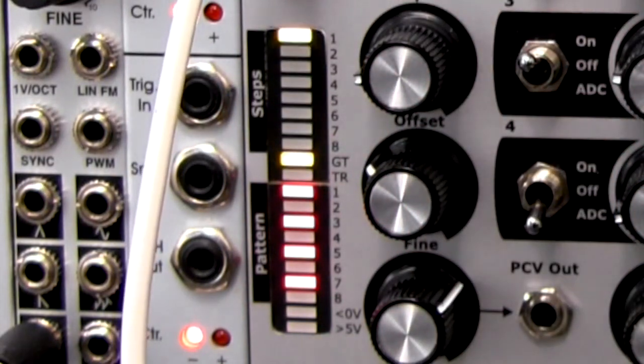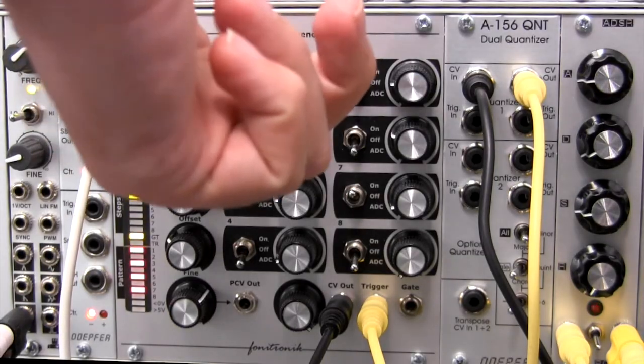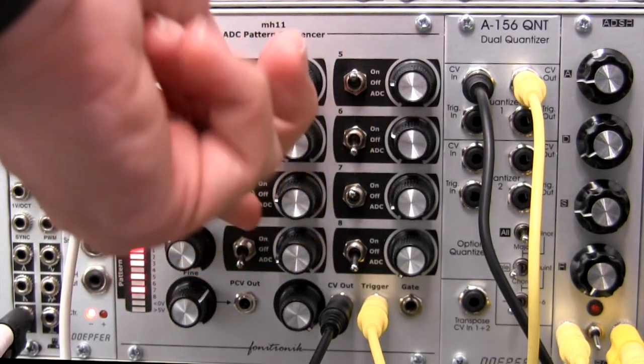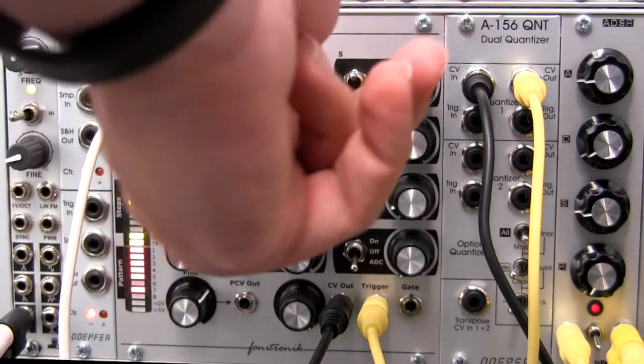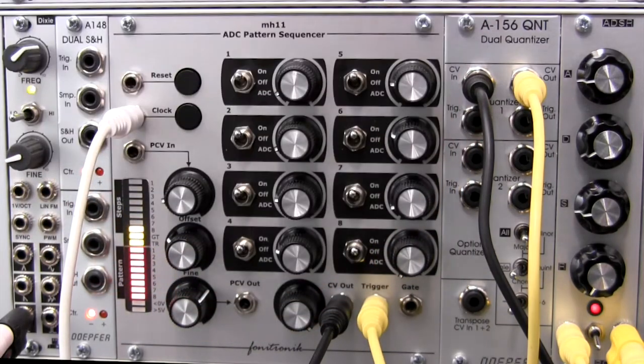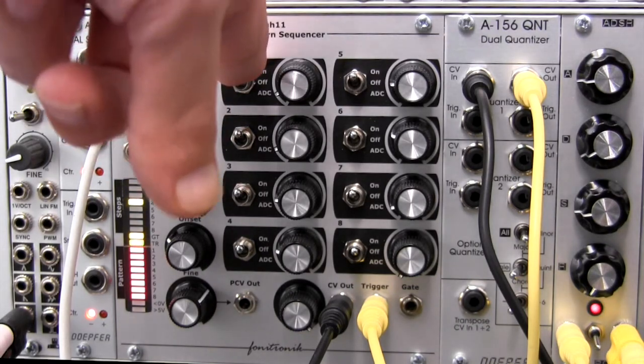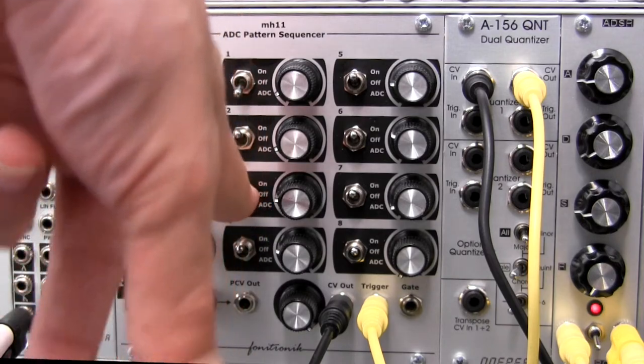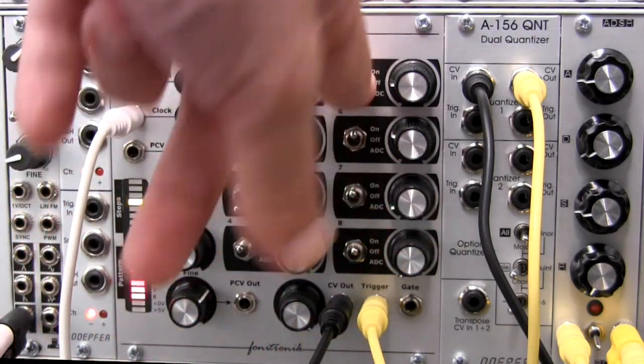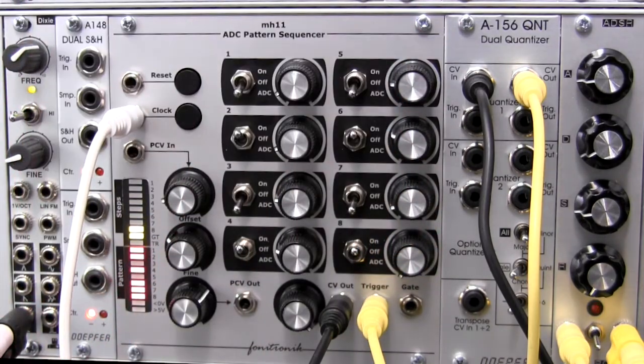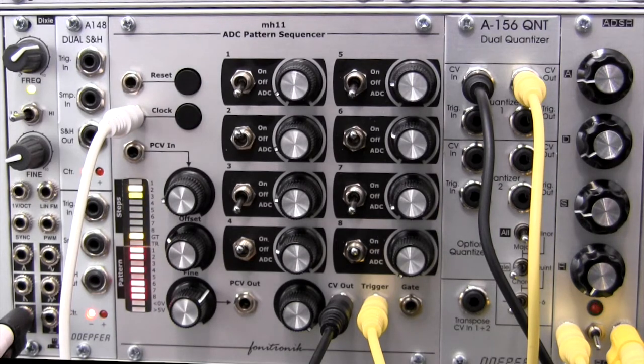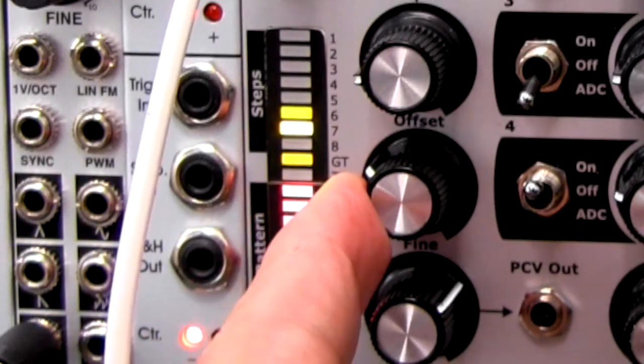So that's one flavor of pattern. Let's try different steps. So I'm going to flip them all back to on. Now let's just do the odd steps. So we'll do step one, step three, step five, and step seven. And then just make some adjustments here.